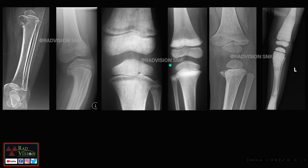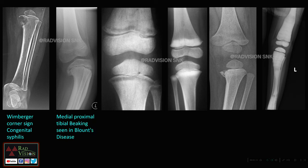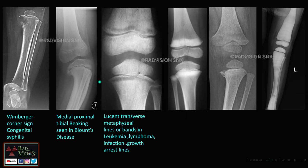Next, we'll see different tibial lesions commonly encountered as spotters. We've already seen metaphyseal destruction of the medial proximal tibia in congenital syphilis. Next is medial proximal tibial spiking — medial proximal tibial beaking or spiking — seen in Blount's disease. Next, linear transverse metaphyseal lines or bands are seen in leukemia, lymphoma, infection, or growth arrest lines.